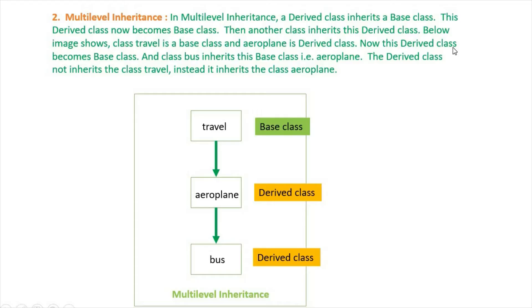Now this derived class becomes a base class, and class Bus inherits this base class, which is Aeroplane. The derived class does not inherit class Travel directly; instead it inherits class Aeroplane.